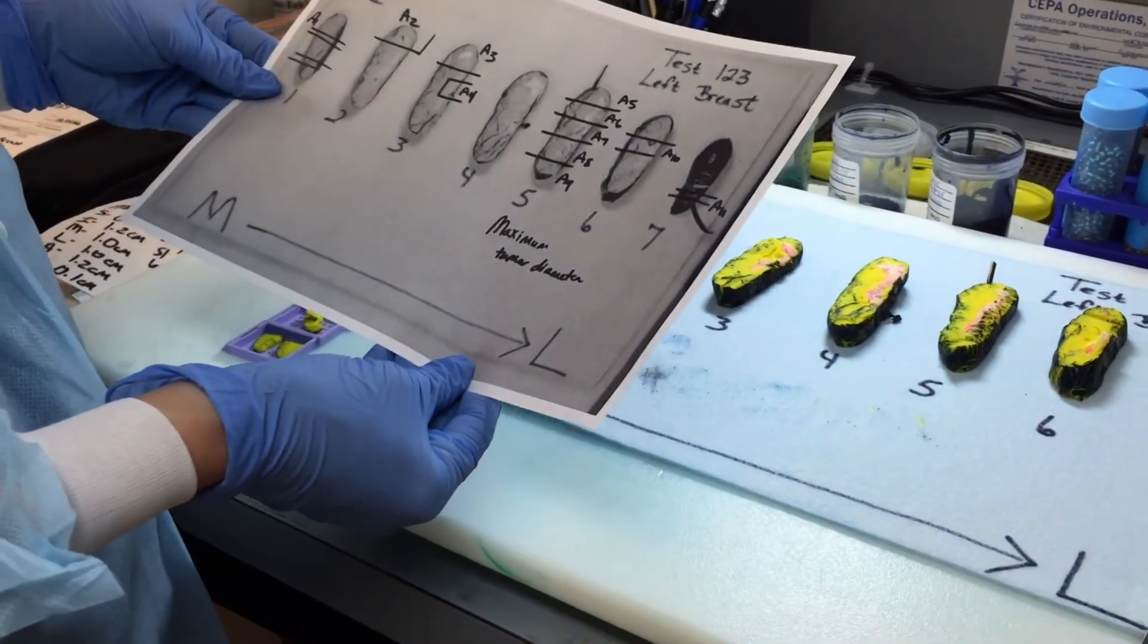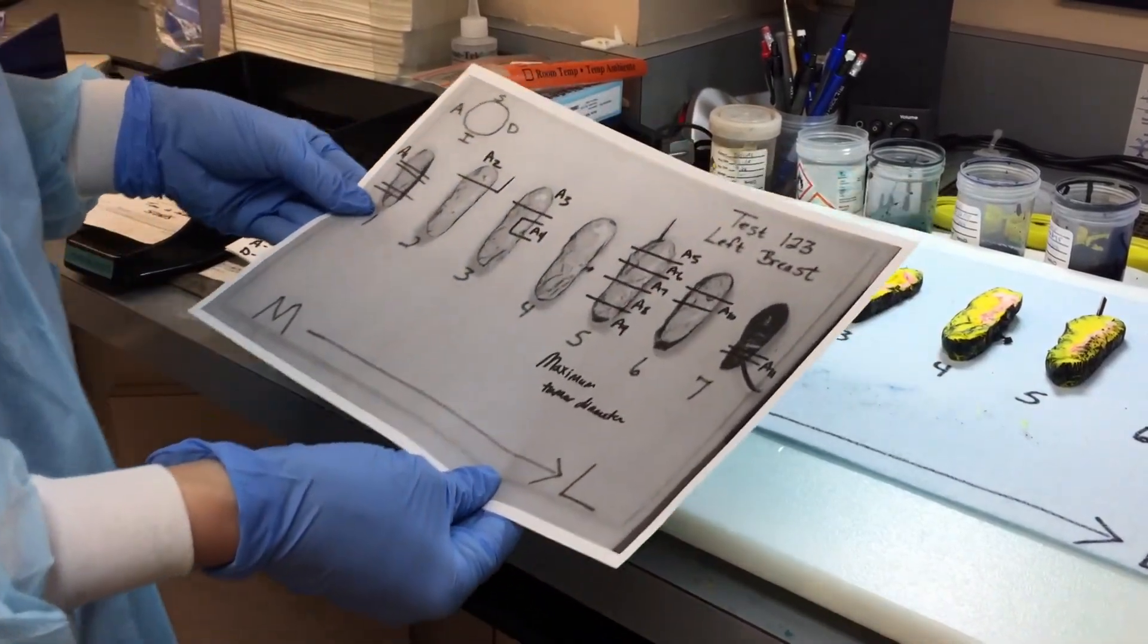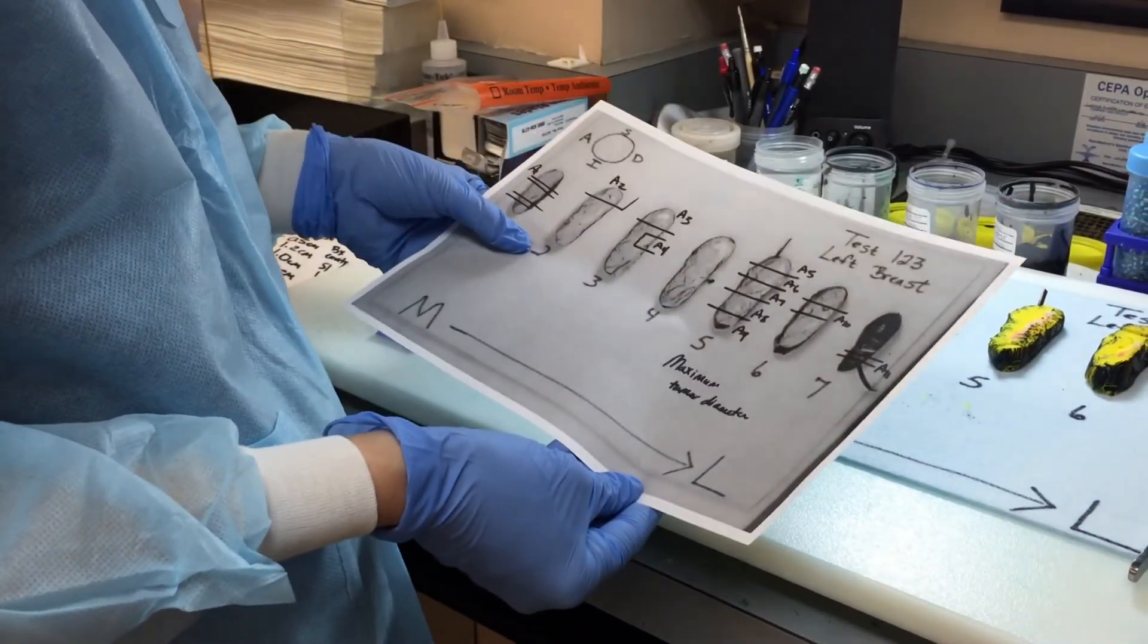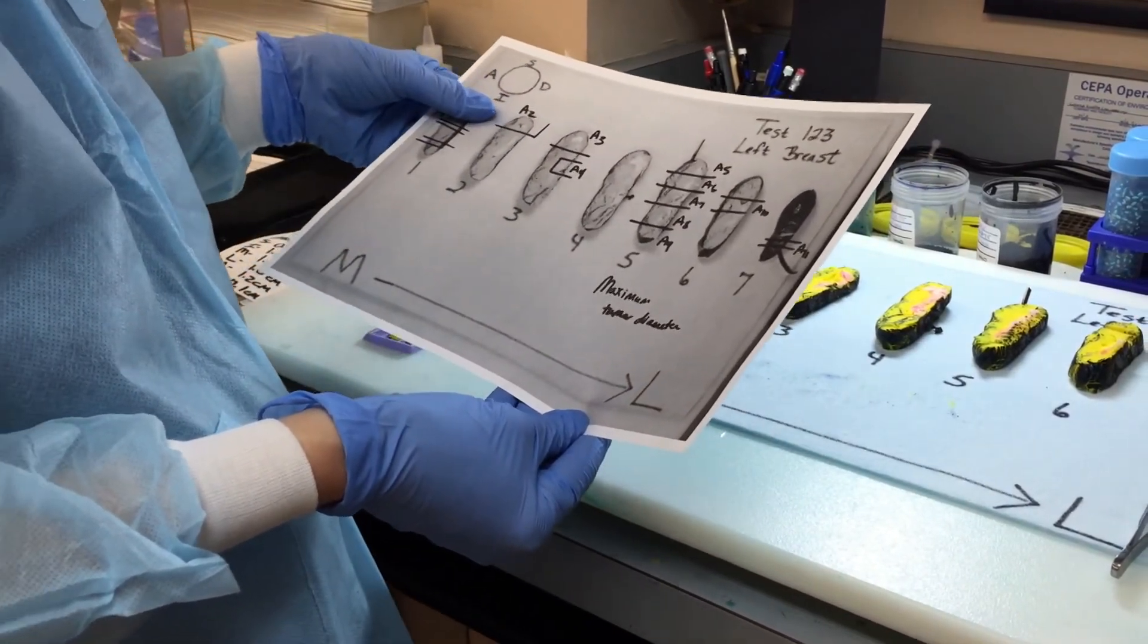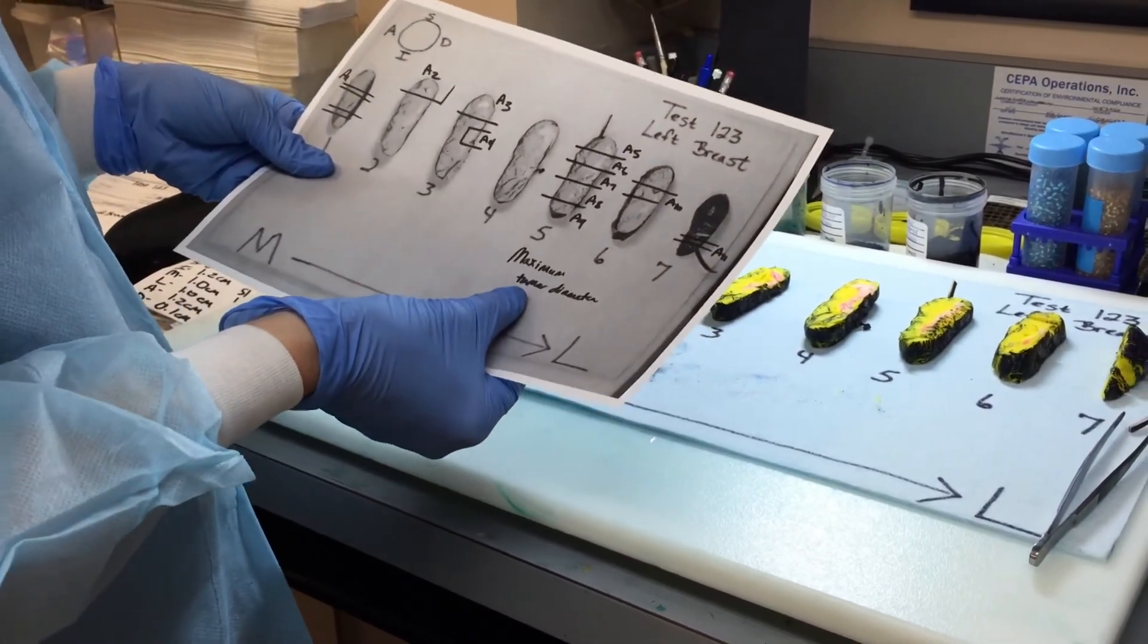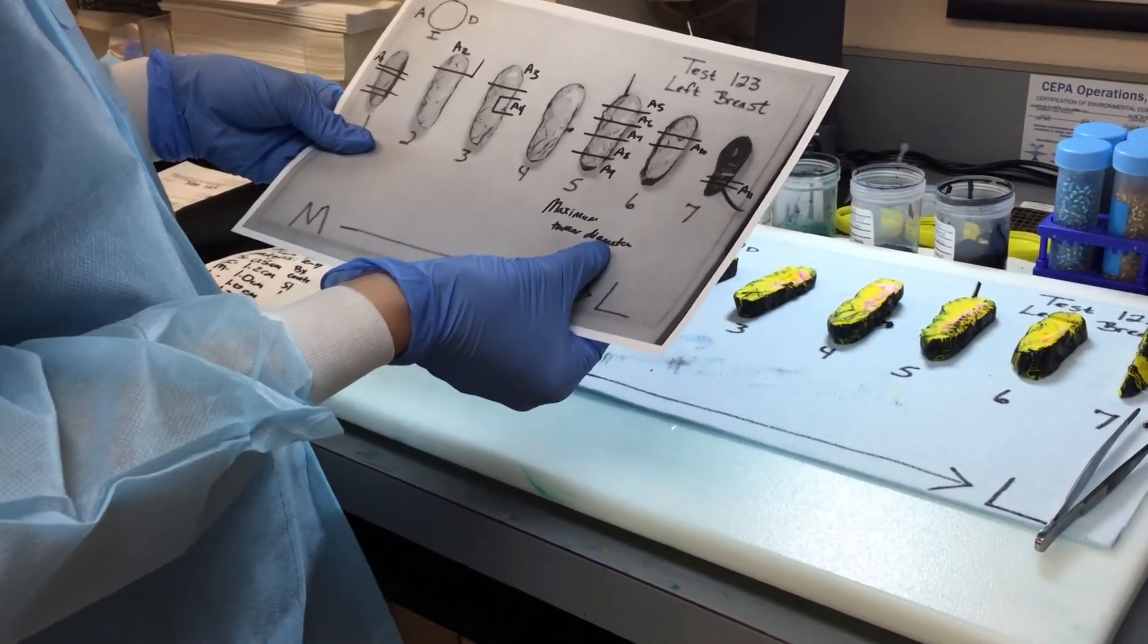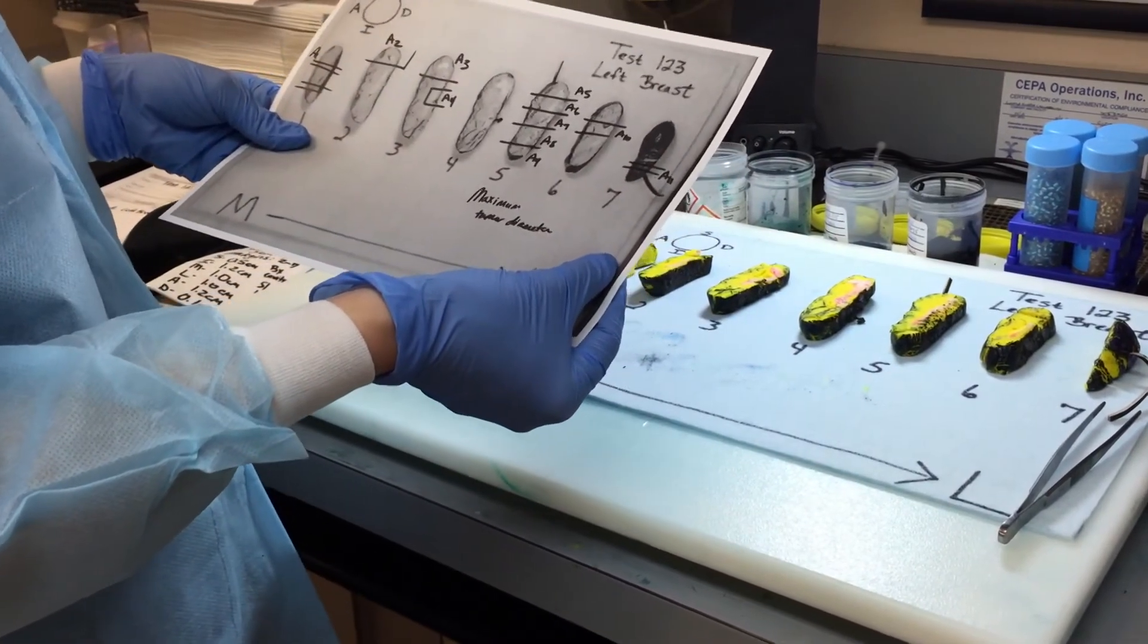And then we go on to dictate our block key. So we use the sheet that we've already made, but we also check our block key as well as looking at the breast tissue to make sure that everything is in check. So for the block key we have A1, slice number 1, representative perpendicular sections of the medial margin. A2, slice number 2, with nearest superior margin. A3, slice number 3, with nearest superior margin. A4, slice number 3, with nearest deep margin. A5 through A9 is slice number 5, one contiguous section, with maximum tumor diameter. A6, or sorry, A10 is slice number 6, representative section of previous biopsy cavity. And A11 is slice number 7, perpendicular section of lateral margin.